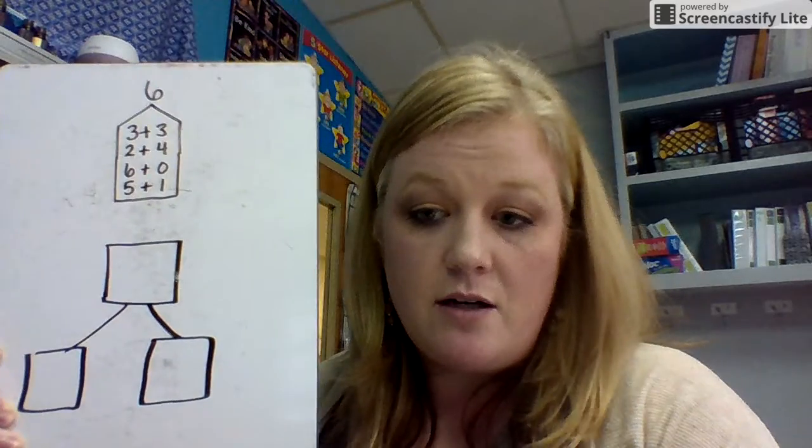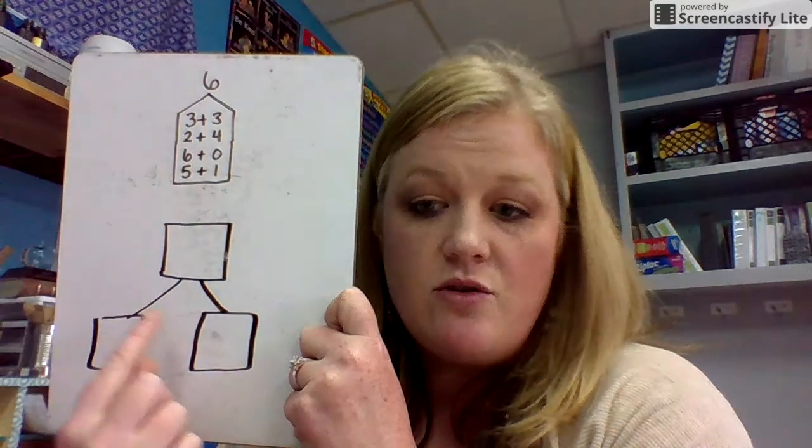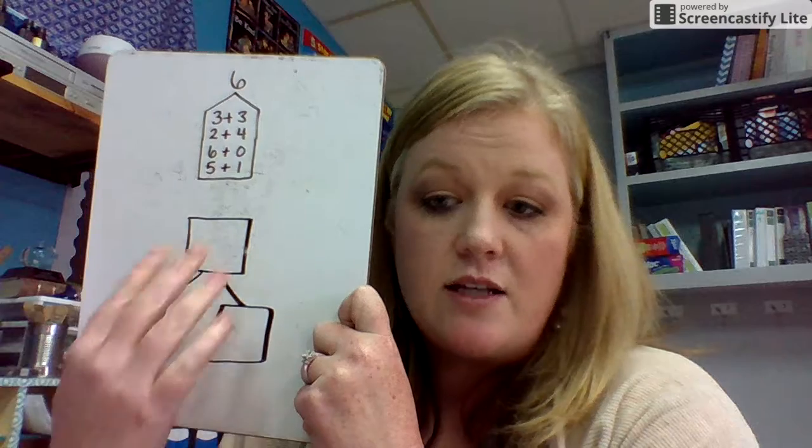So whenever your child is talking about a number bond, just know that the total is at the top and then you can add these two parts together to get the total.